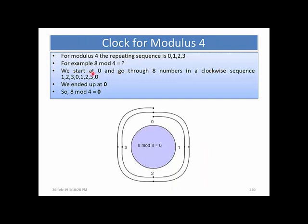So we start at 0 and go through 8 numbers in a clockwise sequence: 1, 2, 3, 0, 1, 2, 3, 0, 1, 2, 3, 0, 1, 2, 3, 0. We end up at 0, so 8 mod 4 is equal to 0.